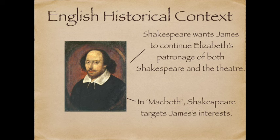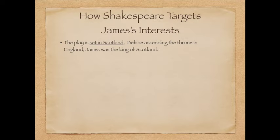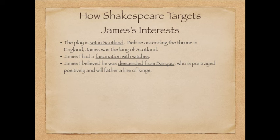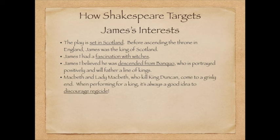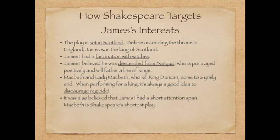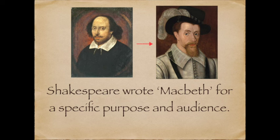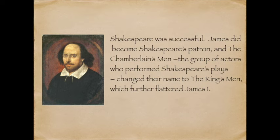James was the King of Scotland, and the play is set in Scotland. There are witches in the first scene, and James had a fascination with witches. James believed he was descended from Banquo, who is really positively portrayed. Macbeth and Lady Macbeth, who kill the King, come to a grisly end. Macbeth is also Shakespeare's shortest play. Shakespeare wrote Macbeth for James I, and it was successful — James did become Shakespeare's patron. The group of actors who performed Shakespeare's plays, the Chamberlain's Men, changed their name to the King's Men to further flatter James.